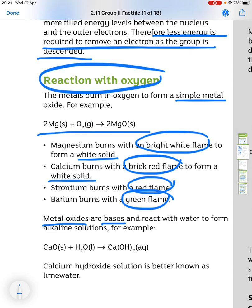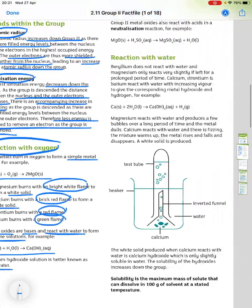Metal oxides, then, are bases that react with water to form alkaline solutions. So, for example, calcium oxide in water gives us calcium hydroxide. And calcium hydroxide solution is better known as lime water.